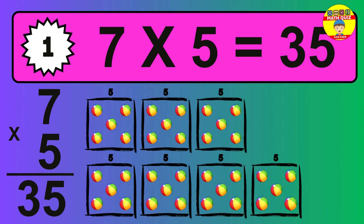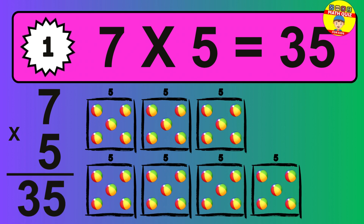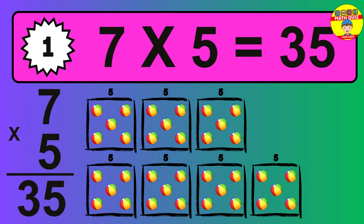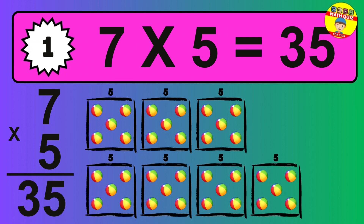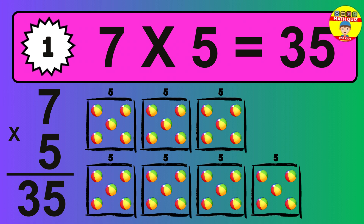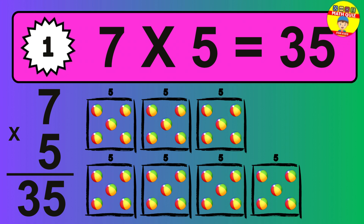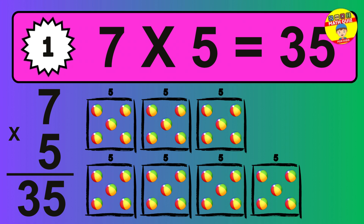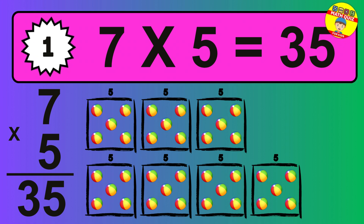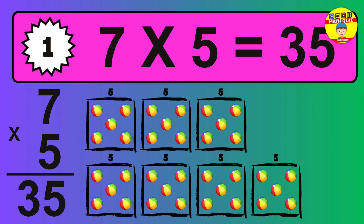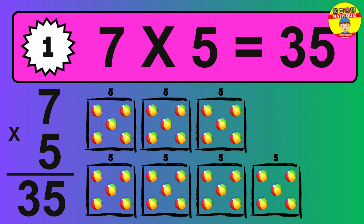The answer is 7 times 5 is 35. To calculate, we have 7 groups with 5 balls each one. So how many balls do we have? 35 balls.